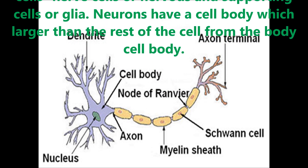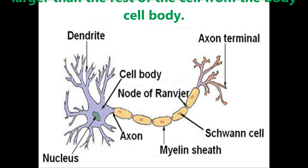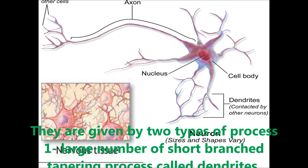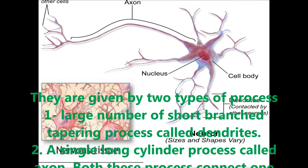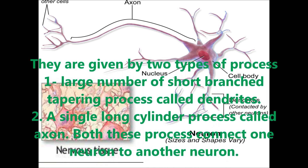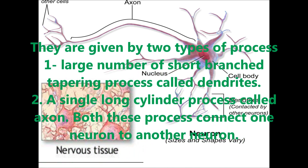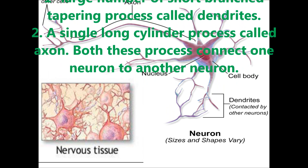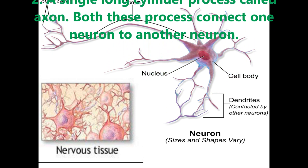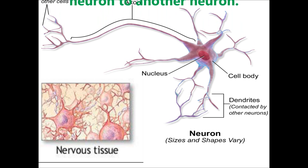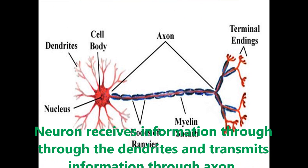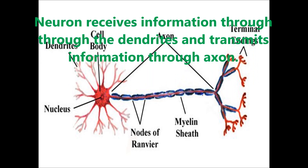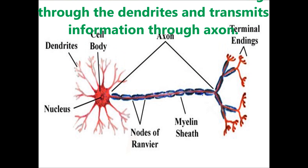Nerve cells have a body which is larger than the rest of the cell. From the cell body, two types of processes are given. The large number of short, branched, tapering processes are called dendrites, and a single long cylindrical process is called an axon. Both these processes connect one neuron to another. A neuron receives information through the dendrites and transmits information through the axon.